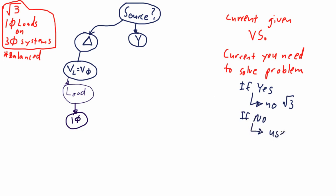That means that the current you were given is not the current that you need to solve the problem, and something needs to be done to that current. This is where the root three is going to come in.